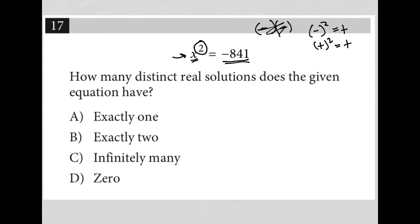So how can any number squared give you a negative number? So let's look at the question here. How many distinct real solutions does the given equation have?